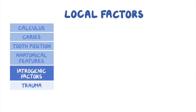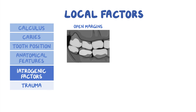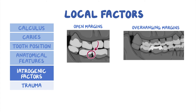Iatrogenic factors are contributing factors that occur due to inadequate dental procedures and restorations. Open margins of restorations occur when the restoration material, such as a crown, does not reach the natural tooth margin, leaving a small gap where dental plaque can accumulate. Overhanging margins occur when the material extends beyond the tooth structure, creating an overhang. In addition to being extremely hard to clean, this environment also promotes the growth of gram-negative bacteria that can eventually cause periodontal disease.